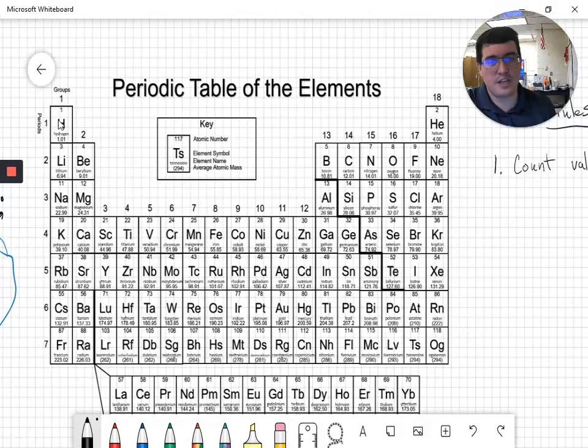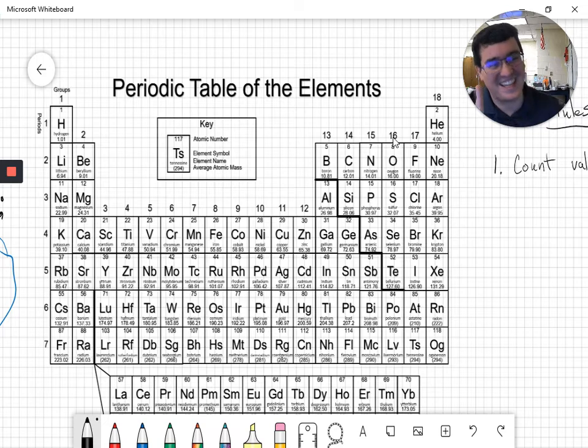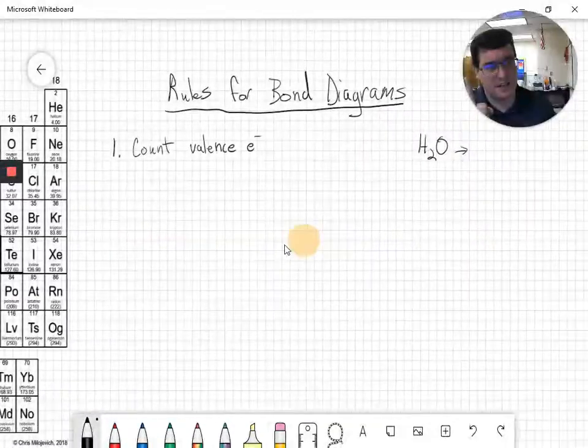We see hydrogen is in group one, so that means it has one valence electron. Oxygen is in group 16, so that means it has 16 valence electrons. No, it doesn't. Oxygen only has eight electrons. How could it have 16 valence electrons? Remember for the P block, you take the group number minus 10. So oxygen actually has six valence electrons.